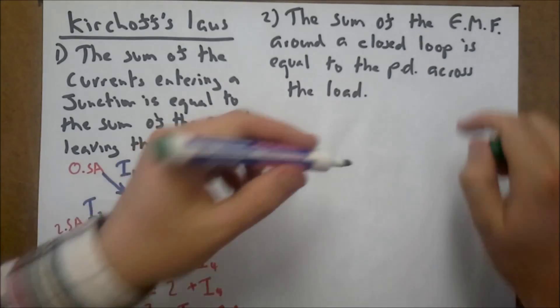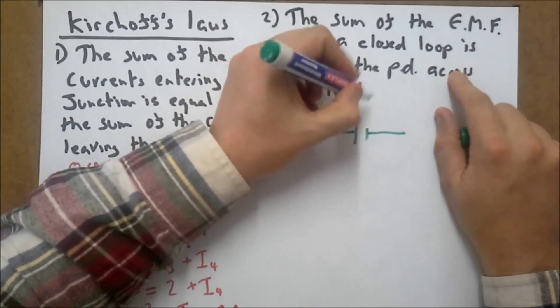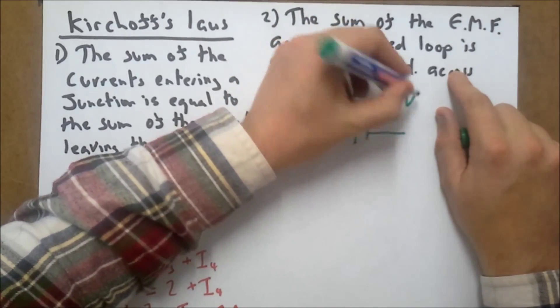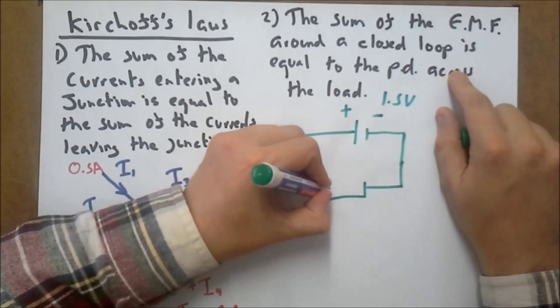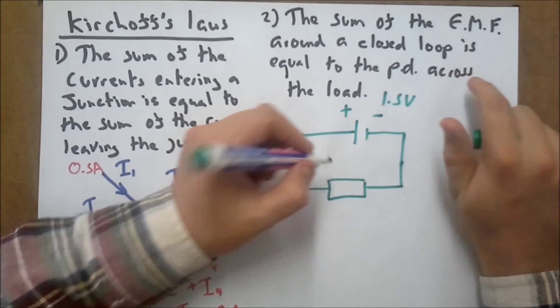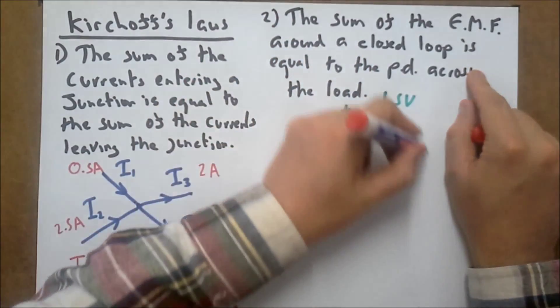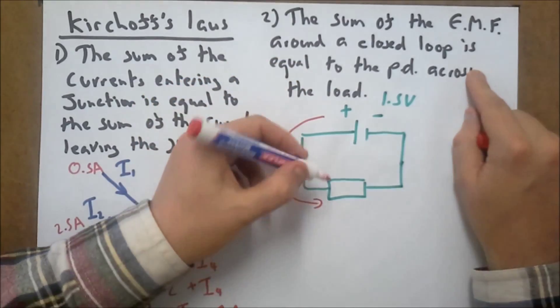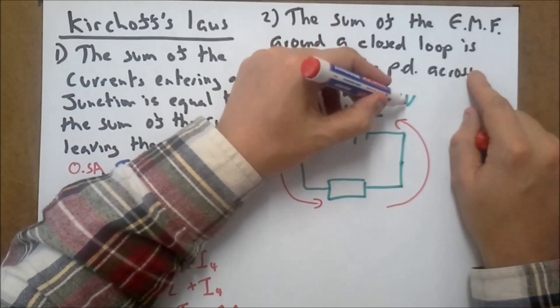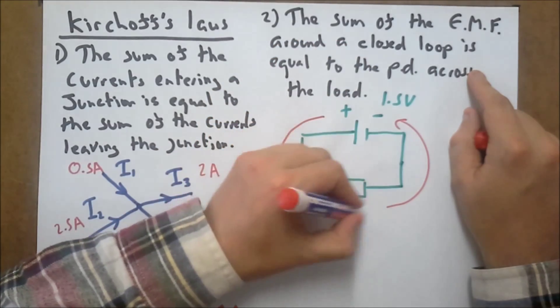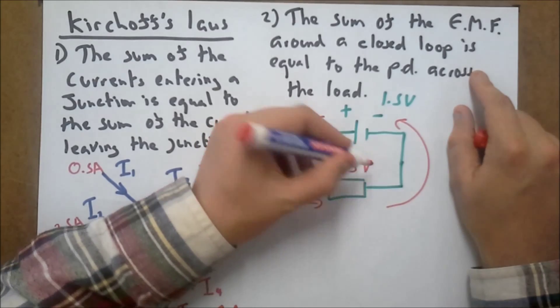So let's draw a little circuit. Maybe we've got a basic cell with an EMF of 1.5 volts. Maybe we've just got a resistor here. Now, conventional current goes from positive to negative, and I've just got a very simple loop here. So the EMF coming out of my cell, which is 1.5, must also equal the voltage or potential difference across my resistor here. This is also going to equal 1.5 volts.